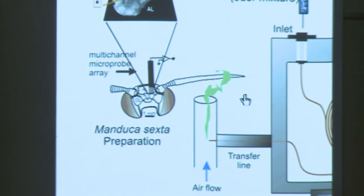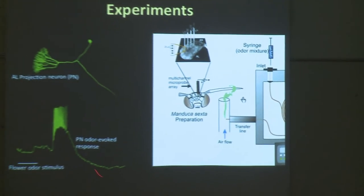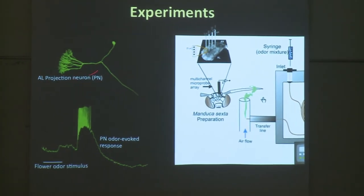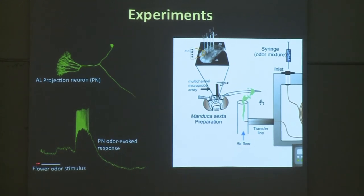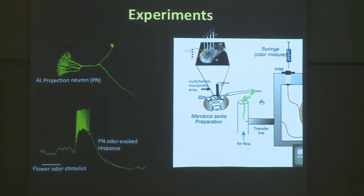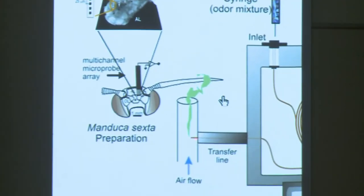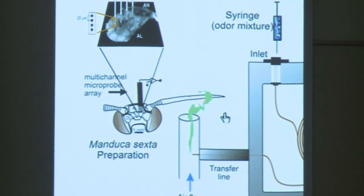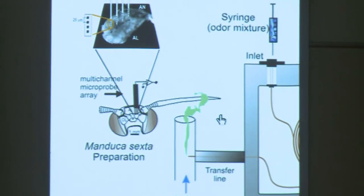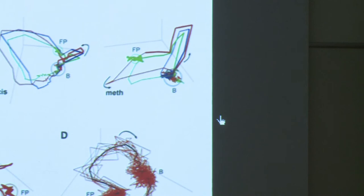Here is a sketch of an experiment. You can see a projection neuron — each time an odor is introduced, it starts to fire a lot, and then it settles to a rest state. The experiment itself introduces an odor for a very short time; it goes through a transfer line, through a tube, to the antenna, and then the moth is supposed to respond to it.